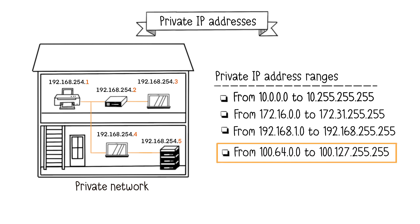Next, there's this other unique range of IP addresses. These are routable IP addresses on the Internet, but are used as private addresses for internal use by Internet service providers for large-scale NATs. NAT stands for Network Address Translation, which involves translating IP addresses into other IP addresses. I won't go into details here, as I have a dedicated video on this topic. In any case, these are reserved private IP addresses.